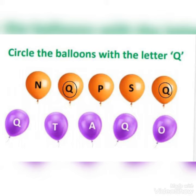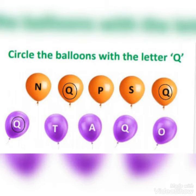In the second row, the first balloon is letter Q, so you have to put a circle on that balloon also. Very good. The second balloon is letter A — no need.